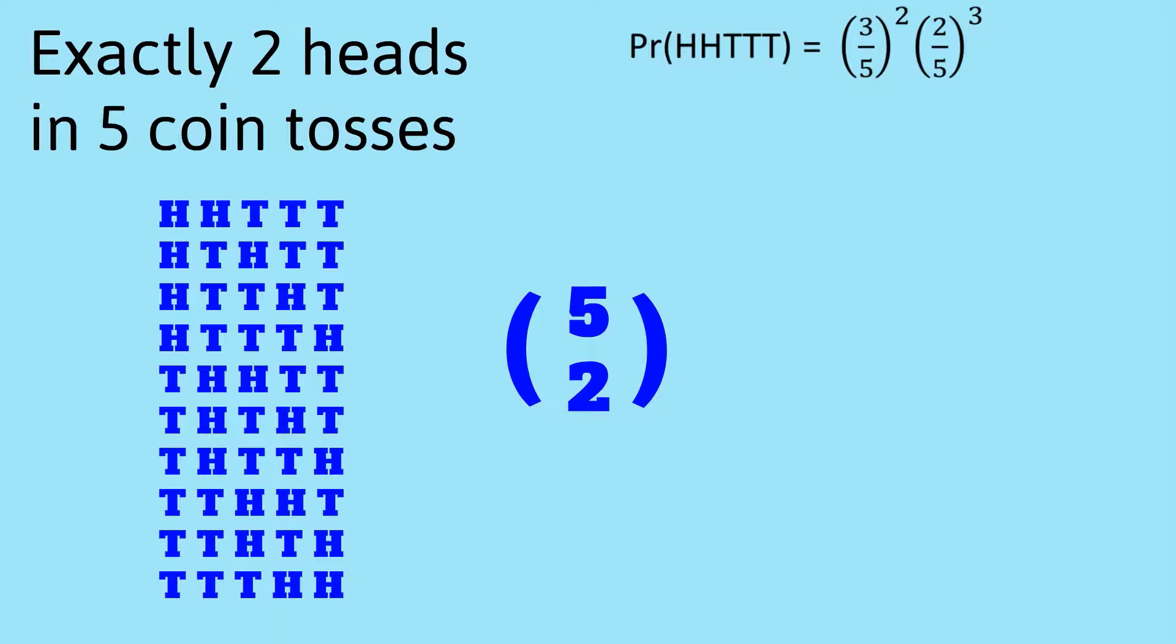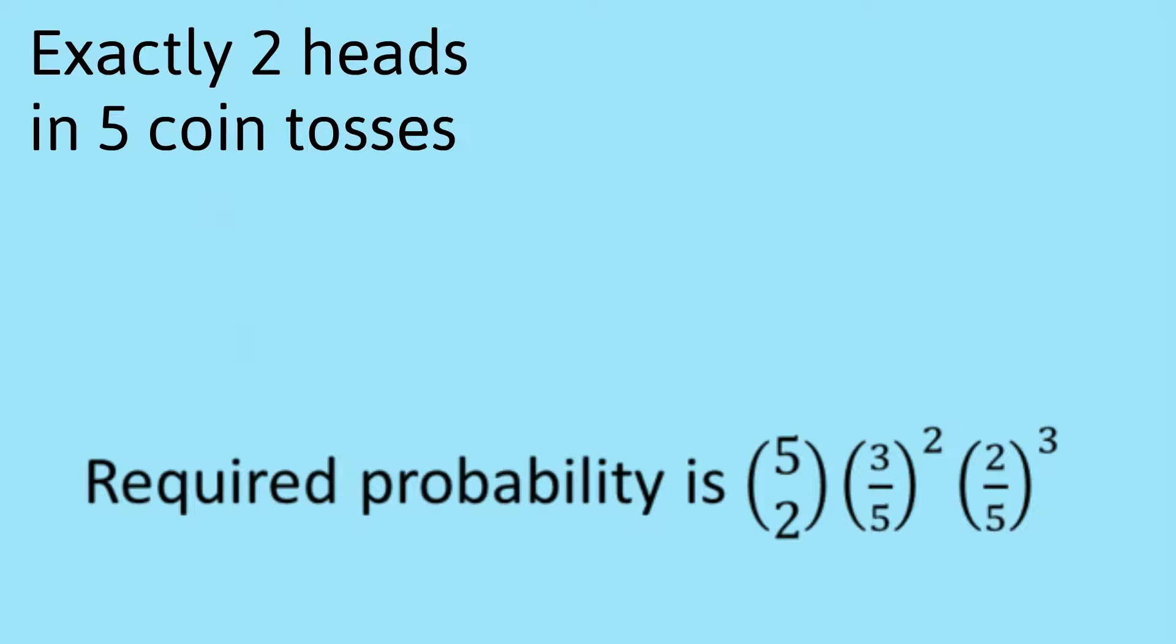So we're now ready to answer the question. The required probability is 5C2 times three-fifths squared times two-fifths cubed.